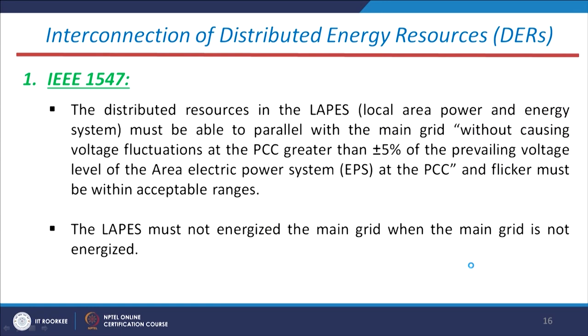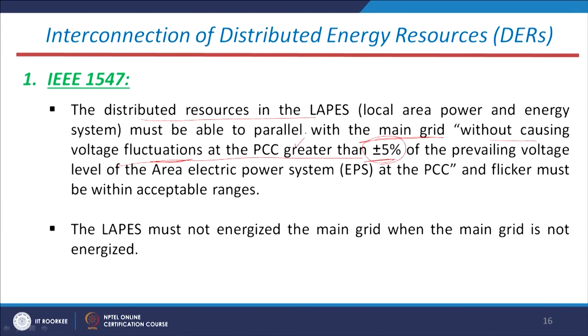The distributed energy sources in the LAPS must be able to operate in parallel with the main grid without causing voltage fluctuations at the PCC greater than plus or minus 5 percent. So when connecting DERs such as solar or wind to the existing grid, voltage fluctuations at the PCC bus should not exceed ±5 percent of the nominal value — this is one of the standards of the IEEE 1547 series.